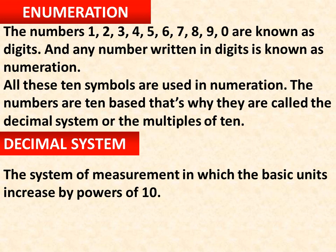What is the decimal system? The decimal system is a system of measurement in which the basic units increase by powers of 10. It is a measurement system where each place value increases by a power of ten.